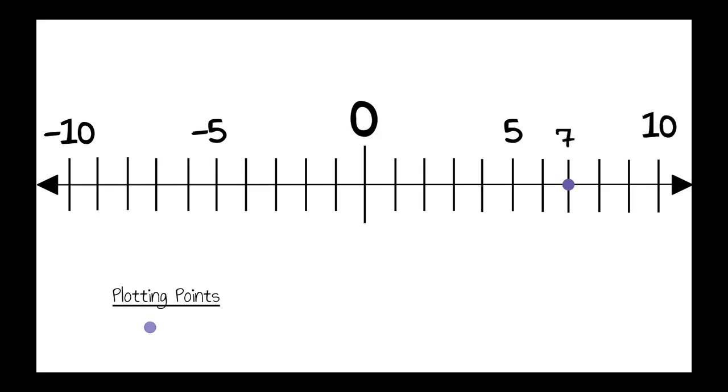You should now know that 7 is 7 units away from 0. Negative 7 being the absolute value of 7 makes it 7 units away from 0 as well, but this time it will land on the left side of 0 because negative 7 is a negative integer.